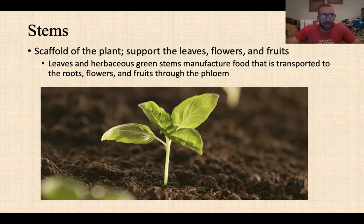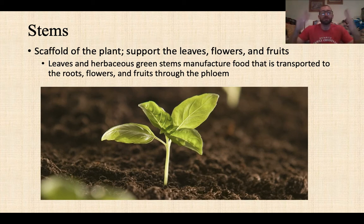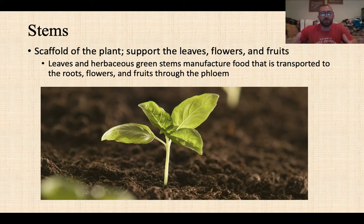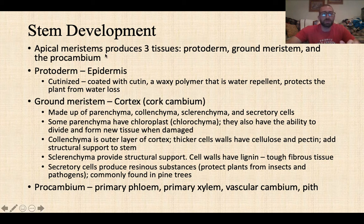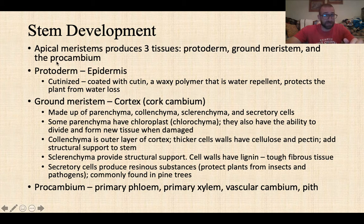Stems are the scaffold of the plant — they support the leaves, flowers, and fruits. Herbaceous green stems can also photosynthesize and manufacture food that is transported throughout the plant. Stem development is very similar to root development: the apical meristem again produces three tissues — protoderm, ground meristem, and procambium — the same as in the root. The main exception is that we don't have a root cap, since stems are not burrowing through soil.